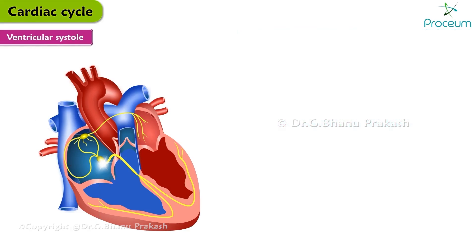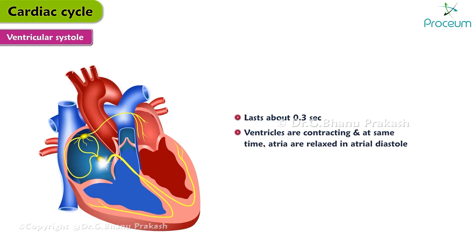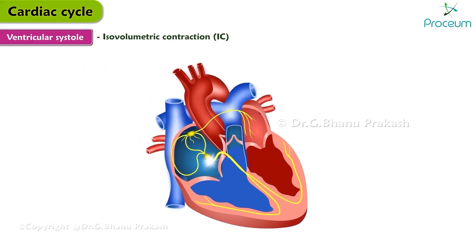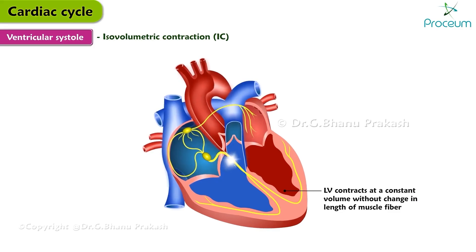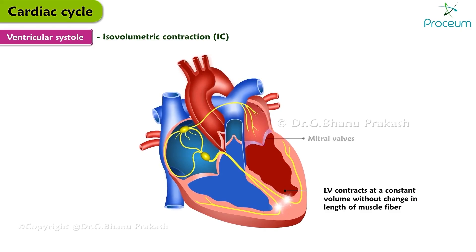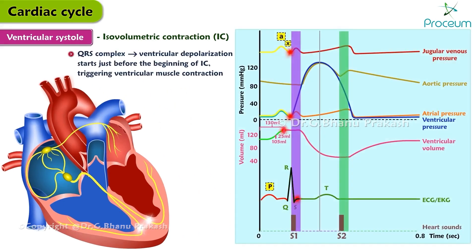Ventricular systole. During ventricular systole, which lasts about 0.3 seconds, the ventricles are contracting while the atria are relaxed in atrial diastole. It is divided into three phases. Isovolumetric contraction: the left ventricle contracts at a constant volume without changing muscle fiber length since both the mitral and aortic valves are closed. On the EKG, the QRS complex representing ventricular depolarization starts just before the beginning of isovolumetric contraction, triggering ventricular muscle contraction.